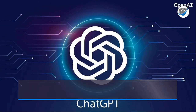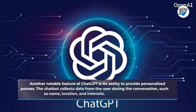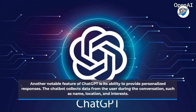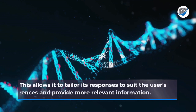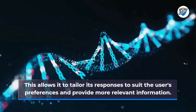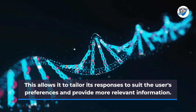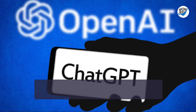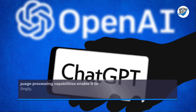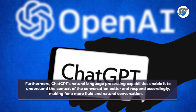Another notable feature of ChatGPT is its ability to provide personalized responses. The chatbot collects data from the user during the conversation, such as name, location, and interests, allowing it to tailor its responses to suit the user's preferences and provide more relevant information. Furthermore, ChatGPT's natural language processing capabilities enable it to understand the context of the conversation better and respond accordingly, making for a more fluid and natural conversation.